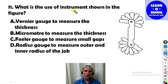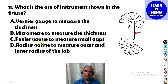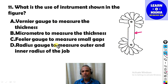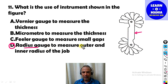Our next MCQ: What is the use of the instrument shown in the figure? The answer is: this is called a radius gauge, and it is used to measure the inner and outer radius — the curvature of a job.